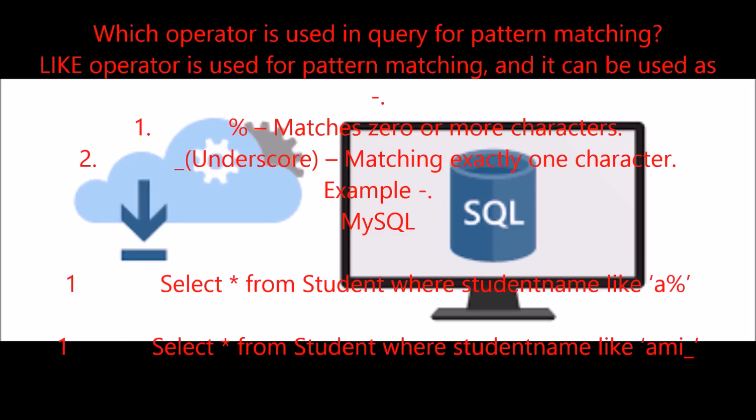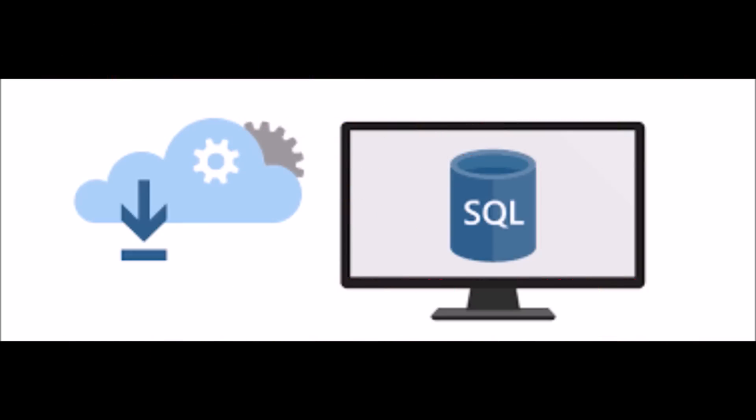The LIKE operator is used for pattern matching, and it can be used as: 1) Percent (%) — matches 0 or more characters. 2) Underscore (_) — matches exactly one character. Example: SELECT * FROM student WHERE student_name LIKE 'a%'. SELECT * FROM student WHERE student_name LIKE 'a__'.